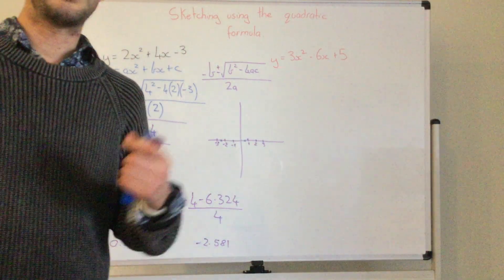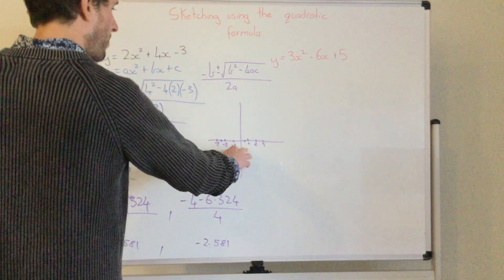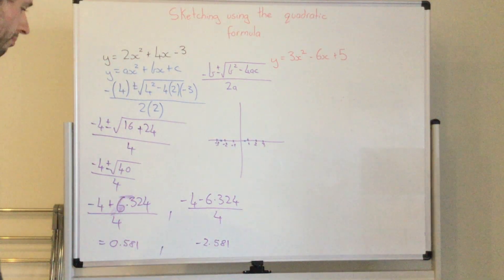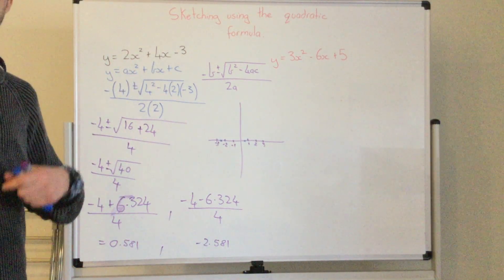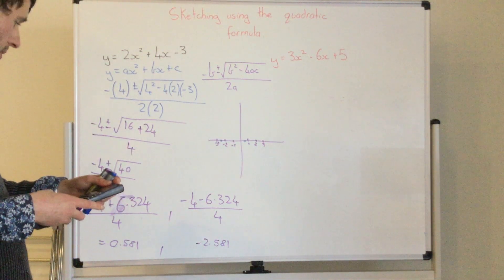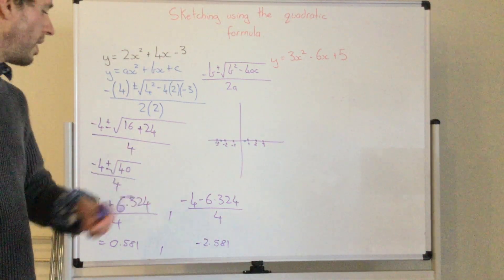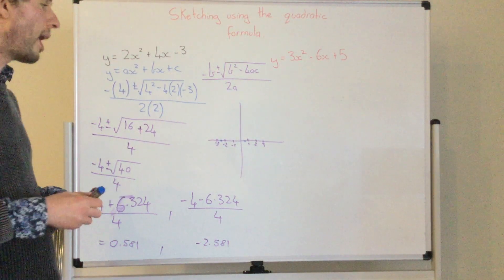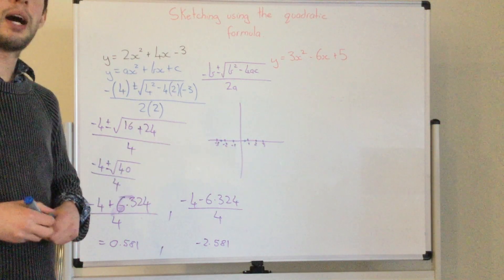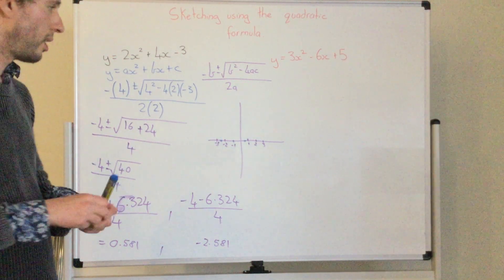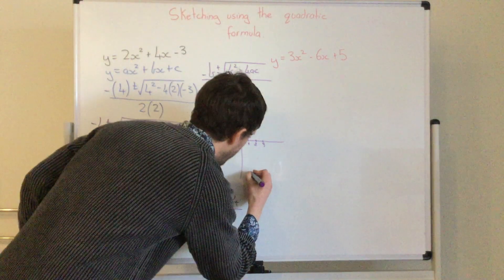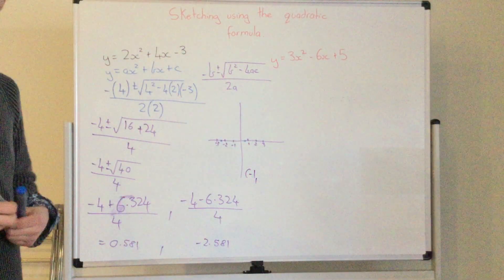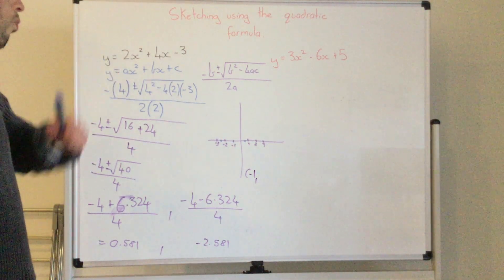The only other thing I need to find now is the halfway point between these. So if I add these two together and then I divide it by 2. So 0.581 plus negative 2.581 divided by 2, I get negative 1. So that means my turning point will be at x equals negative 1.